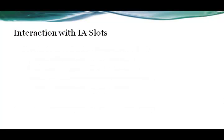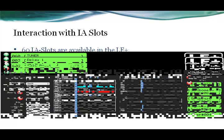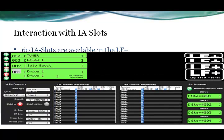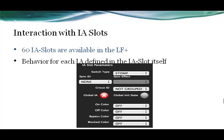The interaction of the IA slots is dependent on the mode that you're in. There are 60 IA slots that you can program within the Liquid Foot that are available at all times. Here you can see a handful of IA slot pages from one all the way up through 60. Each IA slot can have its own singular or multiple programmings based on your needs. The behavior of each IA slot is defined on the IA slot parameters screen, where you define how it will act within the Liquid Foot environment.